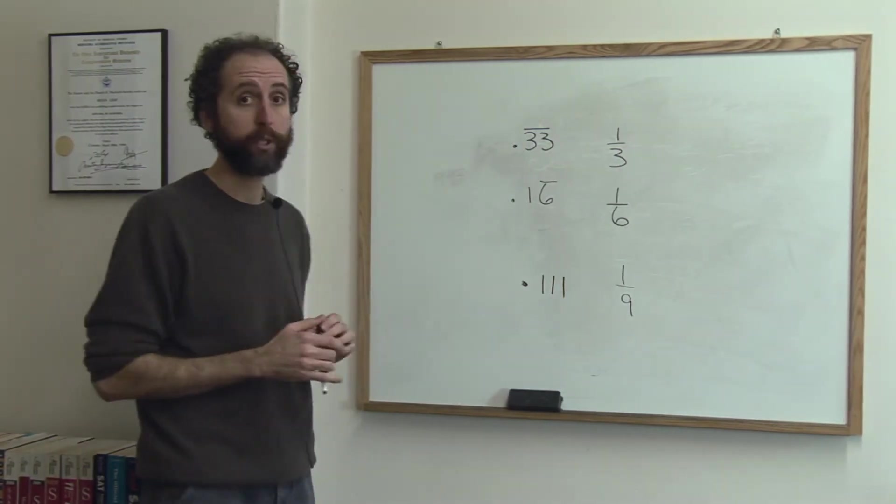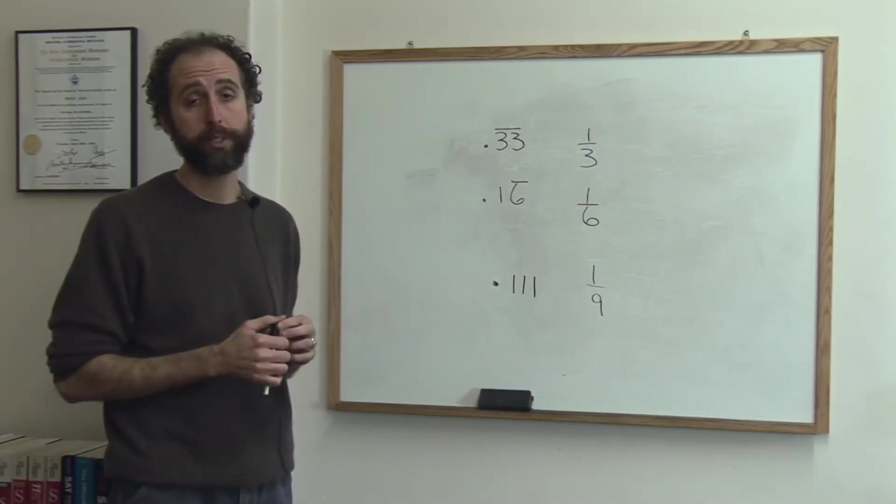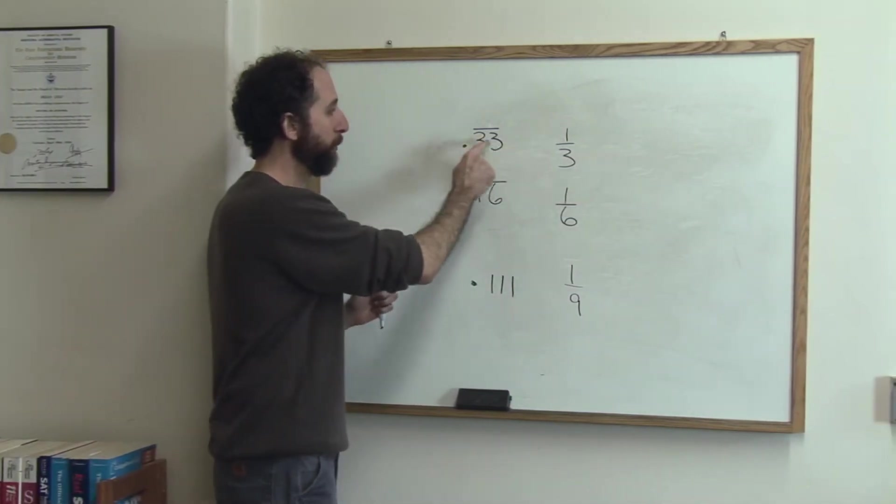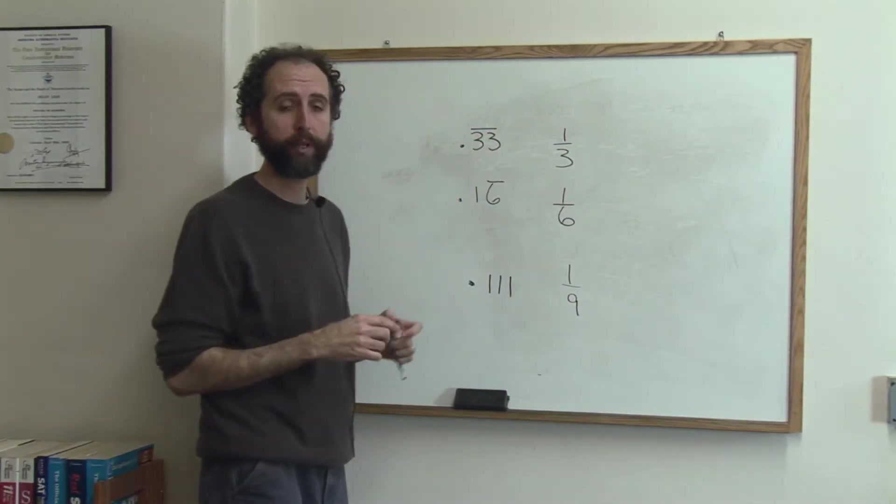So these are the basic ones that you want to memorize, and actually once you memorize these the whole process is pretty easy. So .3333 repeating, that bar means repeating, that's what we use it for in math.